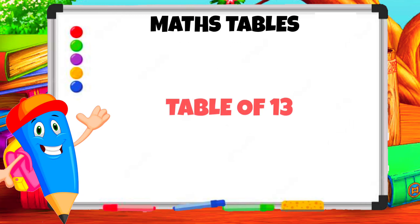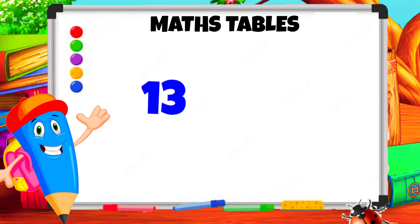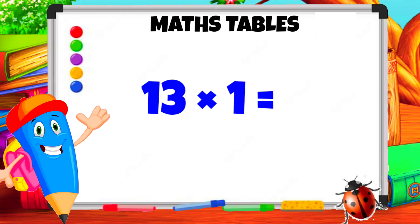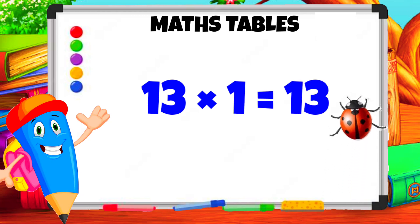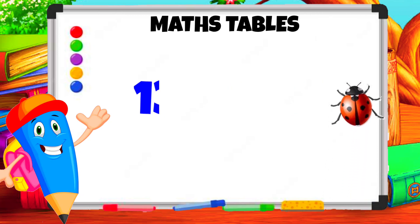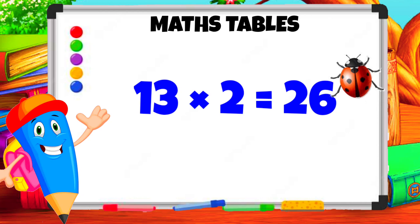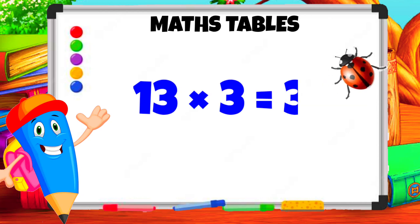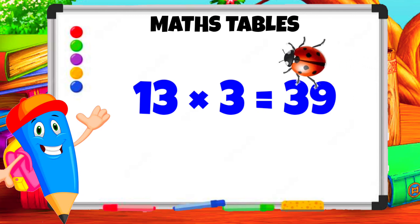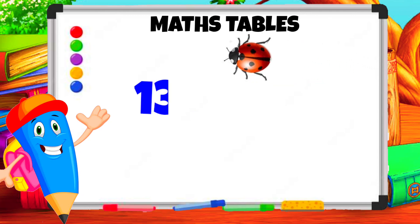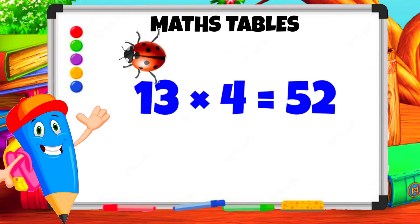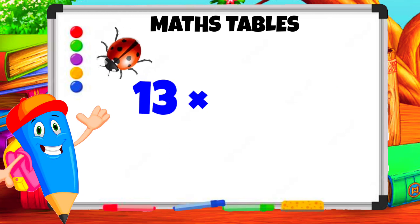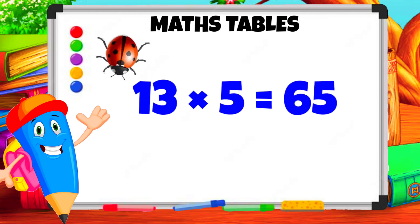Table of 13. 13 1s are 13. 13 2s are 26. 13 3s are 39. 13 4s are 52. 13 5s are 65.